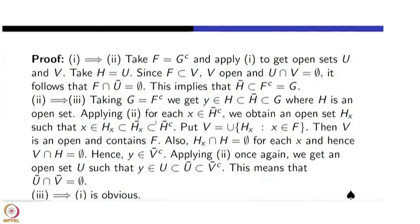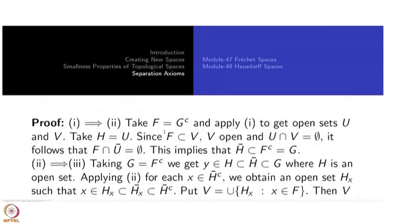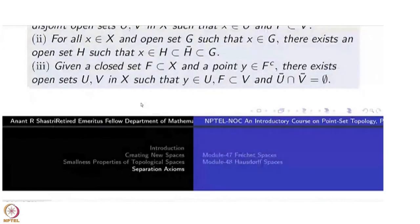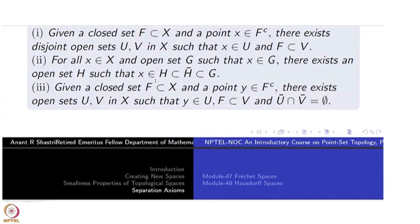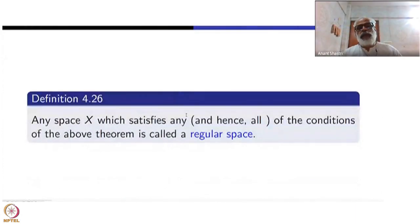Condition 1 is taken as the definition, though 2 and 3 are equivalent — you can use whichever is easiest to verify when you want to test whether a given topological space is regular. So I will take condition 1 as the definition: given a closed set and a point outside it, there are disjoint open subsets containing them — X and F respectively — which is similar to Hausdorff, only instead of two points I have a point and a closed set F. Any space which satisfies any of the conditions — and hence all the conditions — will be called a regular space.